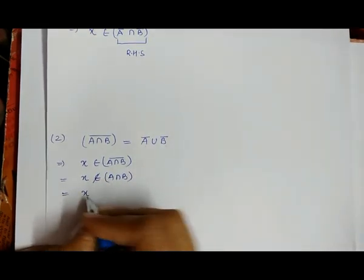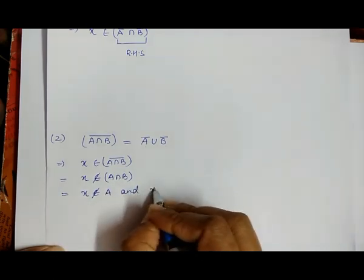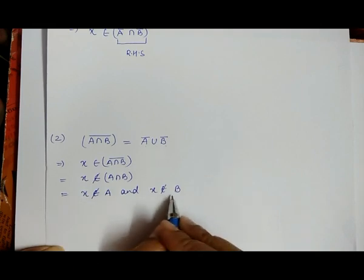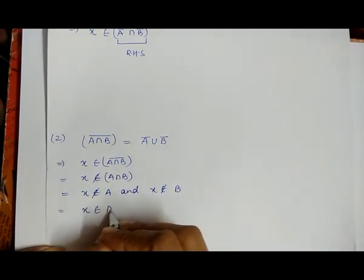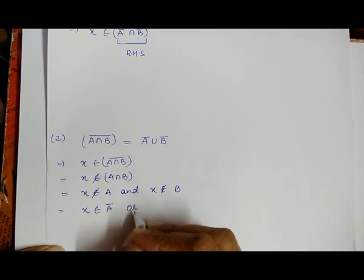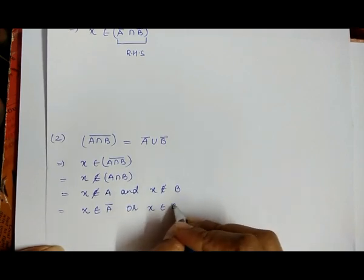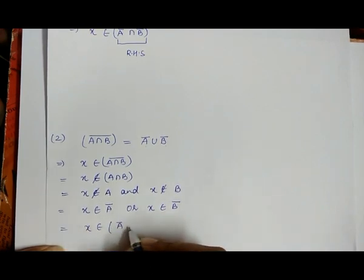Opening the bracket, we write X is not belongs to A and X is not belongs to B. Removing 'not belongs to', this becomes X belongs to A's complement or X belongs to B's complement, which we rewrite as X belongs to A's complement union B's complement.